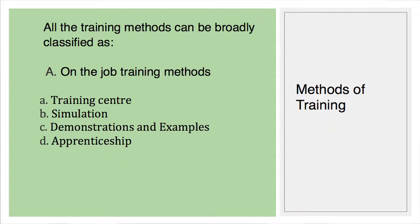Another on-the-job training method is the training center, arranged near the main office where equipment and identical machines used in the factory are kept. Theoretical training is given in the classroom while practical work is conducted on the production line. This type of training is given to lower-level workers. Simulation is an extension of the training center where training work closely duplicates real job conditions, and an attempt is made to safeguard valuable materials during the training period.